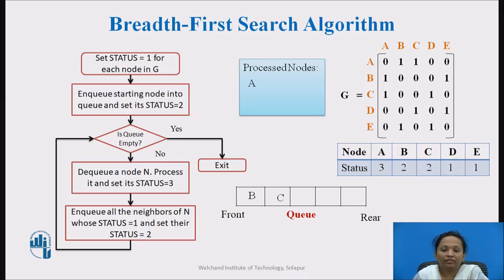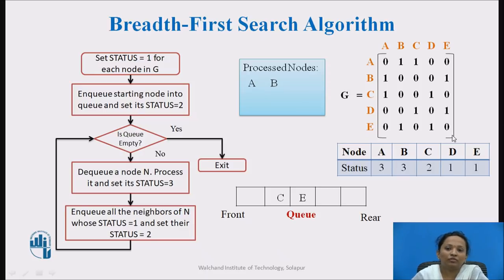We repeat the procedure. Is the queue empty? No. The first node in the queue is B. We dequeue B, mark it as visited, and update its status to 3. Next, we enqueue the neighboring nodes of B. The neighboring node of B is E, which is enqueued into the queue and its status is updated to 2.